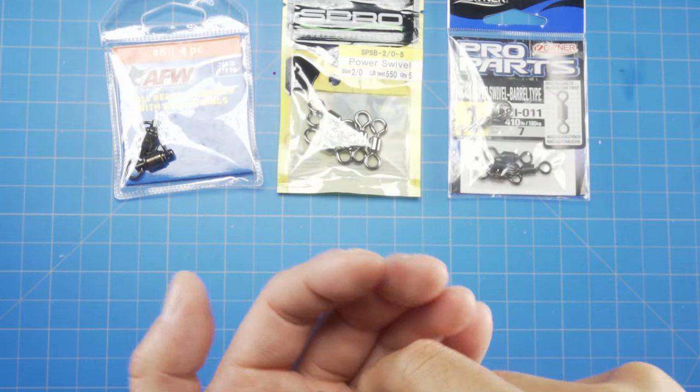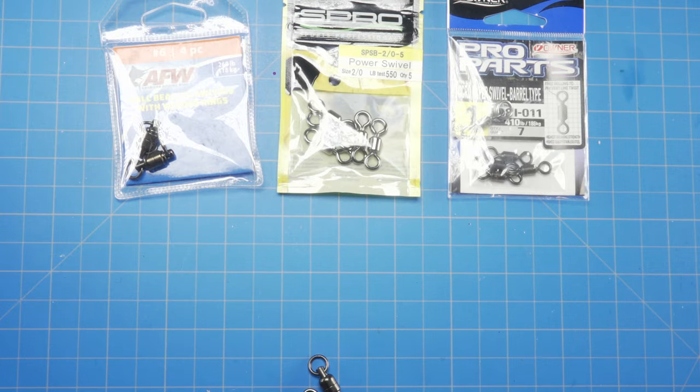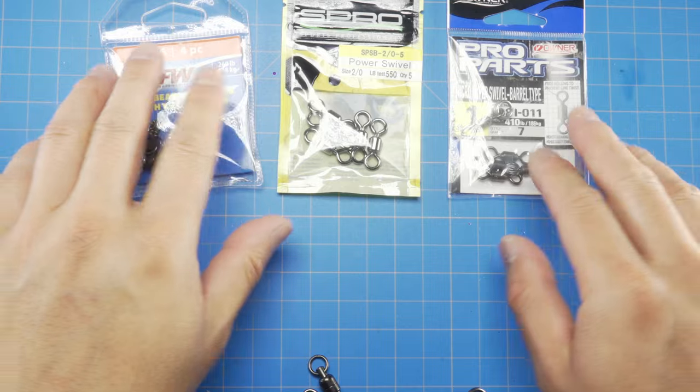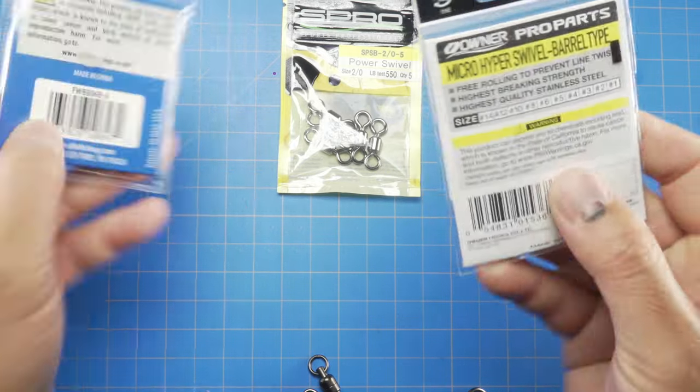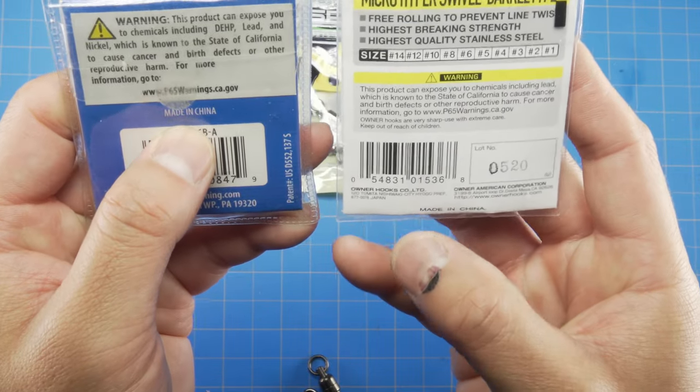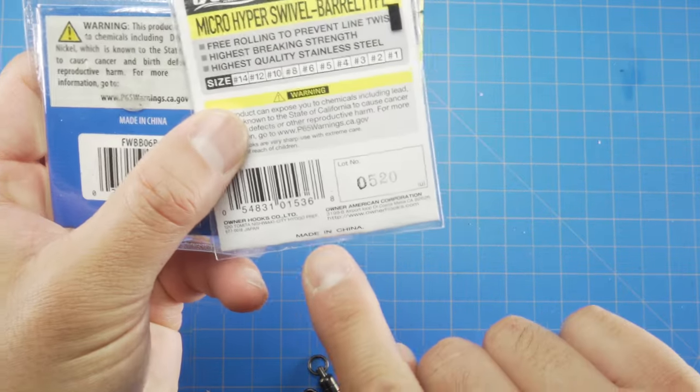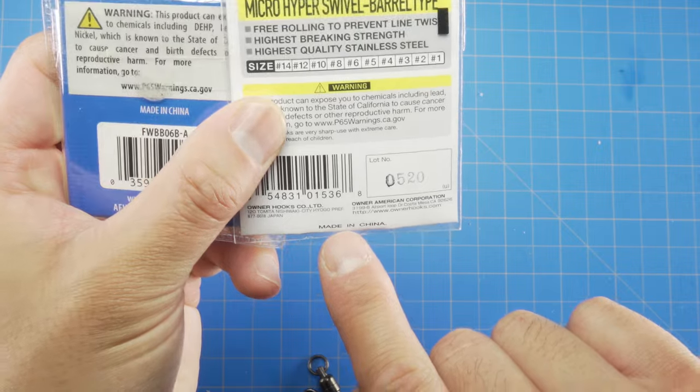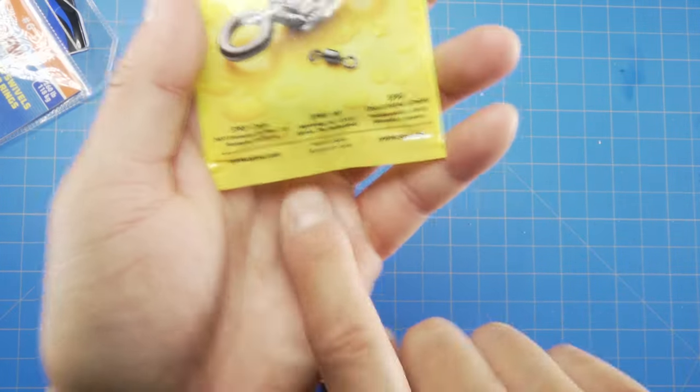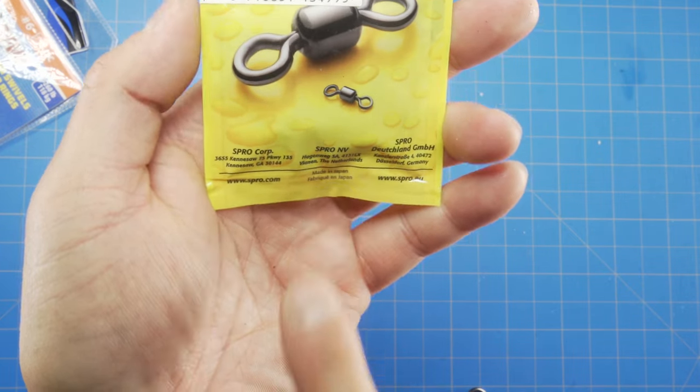So one note, this is mass production from China. And of course we always feel like, is it trustworthy? But I want to note two things that I have here. This is AFW and this is owner. And if you look at the back of them, made in China for the AFW and made in China for the owner as well. This S-Pro, which I was very surprised on, is made in Japan. So pretty good quality stuff right here.